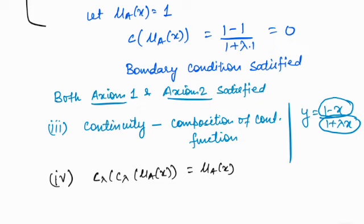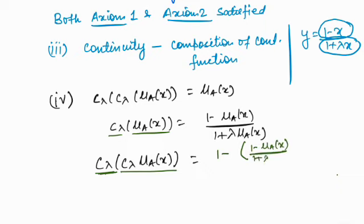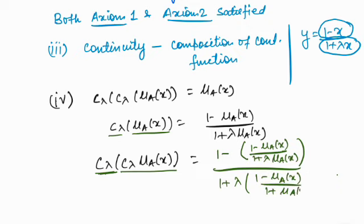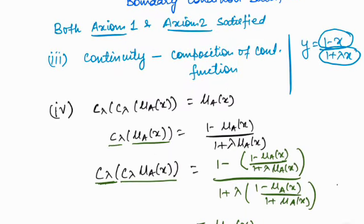Let us verify the involutive property. Applying the complement function again to c_lambda(mu_A(x)), we get 1 minus (1 minus mu_A(x))/(1 plus lambda mu_A(x)), and in the denominator we put c_lambda(mu_A(x)) = (1 minus mu_A(x))/(1 plus lambda mu_A(x)). Once you solve this, you get mu_A(x), confirming it is involutive. Sugeno's class of fuzzy complement satisfies all the axioms.